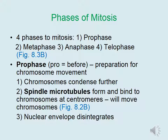First, the chromosomes condense further, or get even shorter, which makes the long, stringy material easier to move across the cell. Spindle microtubules form and bind to the chromosomes at the centromeres; they will pull on the chromosomes to move them where they need to go. Lastly, the nuclear envelope disintegrates or breaks down, because in order for chromosomes to move, the nucleus needs to break down.